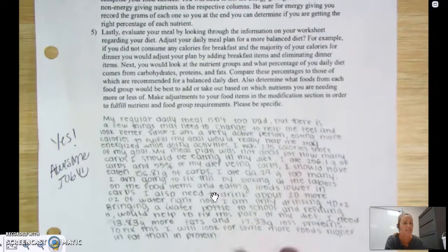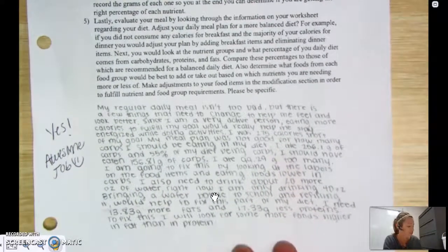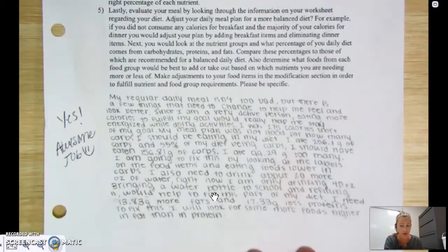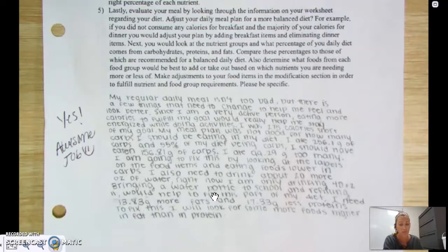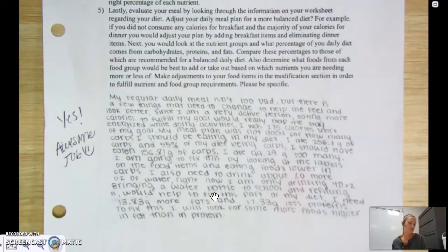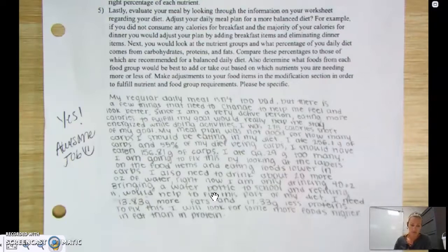So this number five is saying that lastly, you need to evaluate basically everything on this chart, and you need to write up a specific paragraph saying what changes you need to make in your diet in order to fulfill your correct amounts of your energy giving nutrients and the correct amounts from the food groups that you are recommended to be getting.